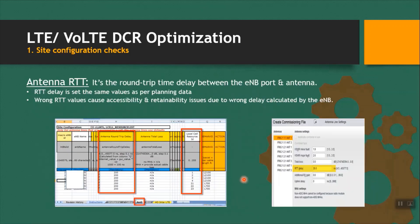Next one is antenna RTT. RTT is round trip time delay between the eNodeB port and the antenna. We have to verify this value is correct for your site. To check this value, you have to log in to BTS Manager. In the BTS Manager commissioning file section, there is the antenna option. Under the antenna, you can find the RTT delay. If it is not correct, it will impact both accessibility and retainability KPIs. It should always be as per the design. If you don't have the value, you can check with the design team.